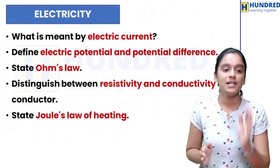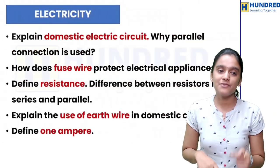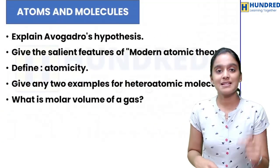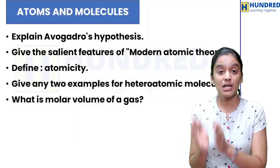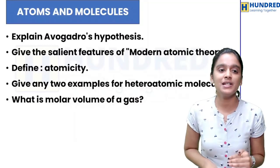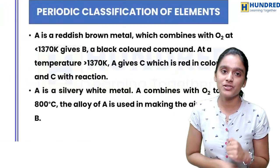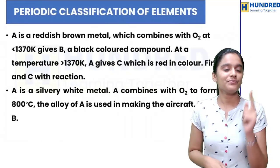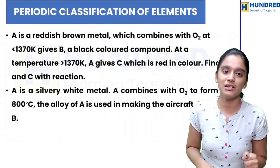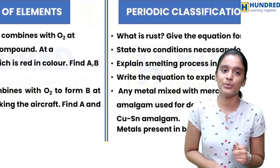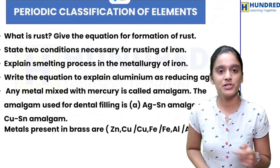Electricity chapter: 5 questions plus 5 questions. Next, if you are going to complete physics, in the Atoms and Molecules chapter: 5 questions plus 3 questions. In the Periodic Classification of Elements, you will have two questions, and all these 5 questions.